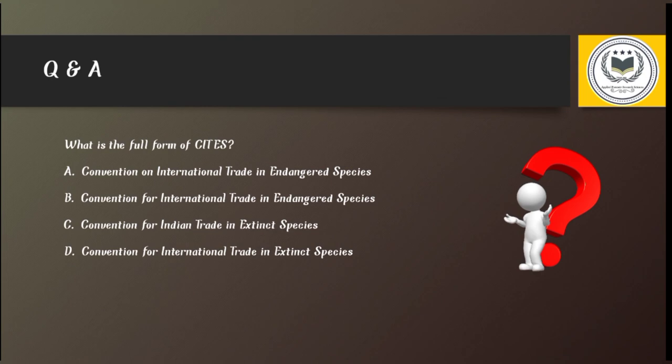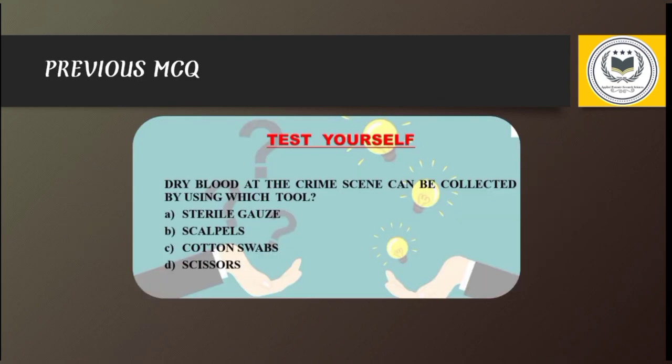Do comment your answers in the comment section. The right answer will be discussed in the next video. The right answer for the MCQ from the previous video on Crime Scene Investigation Tools was: 'Dry blood at the crime scene can be collected using which tool?' The answer is Option A — Sterile Gauze.